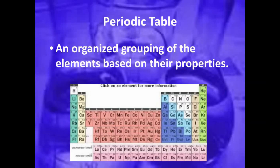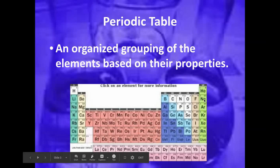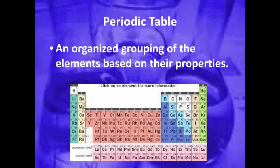When we look at the periodic table, the elements are going to be grouped by their properties. If an element is on the complete opposite side of the periodic table, it's more than likely going to have completely different properties.